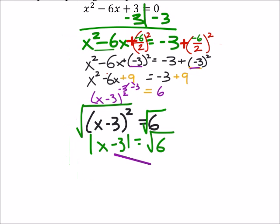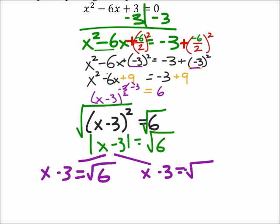And I'm going to split this up. So, I've got x minus 3 equals the positive square root of 6. And x minus 3 equals the negative. I didn't give myself a lot of space there. Sorry. The negative square root of 6.